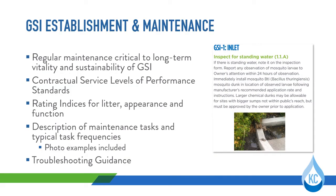It's important to remember that the function of green stormwater infrastructure is directly dependent on regular effective maintenance. The green stormwater infrastructure construction specifications define requirements for service levels of performance standards. These are maintenance standards that should be met during the establishment period, generalized into three overall categories: appearance, weeds and pests, and erosion and drainage. Rating indices for litter, appearance, and function with photo examples of four rating options are included to provide additional clarification regarding maintenance expectations.